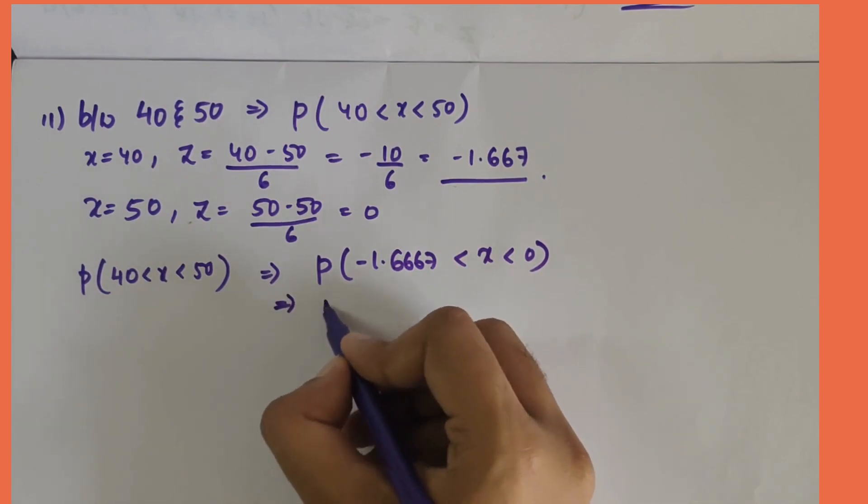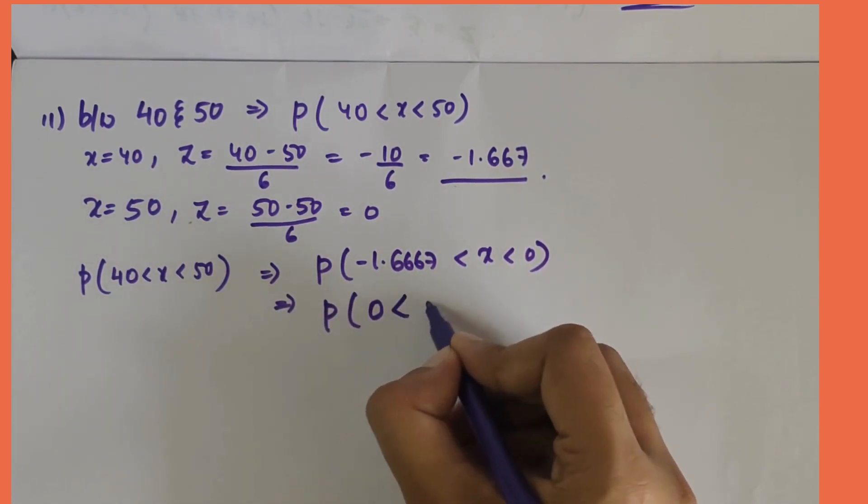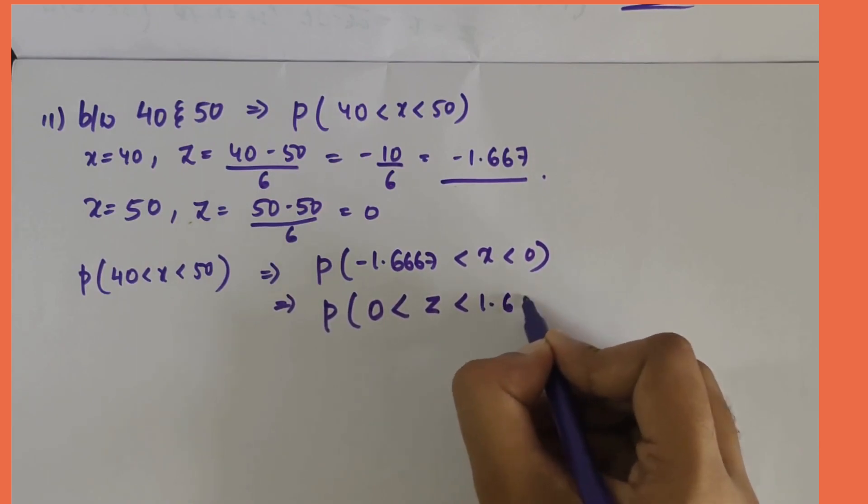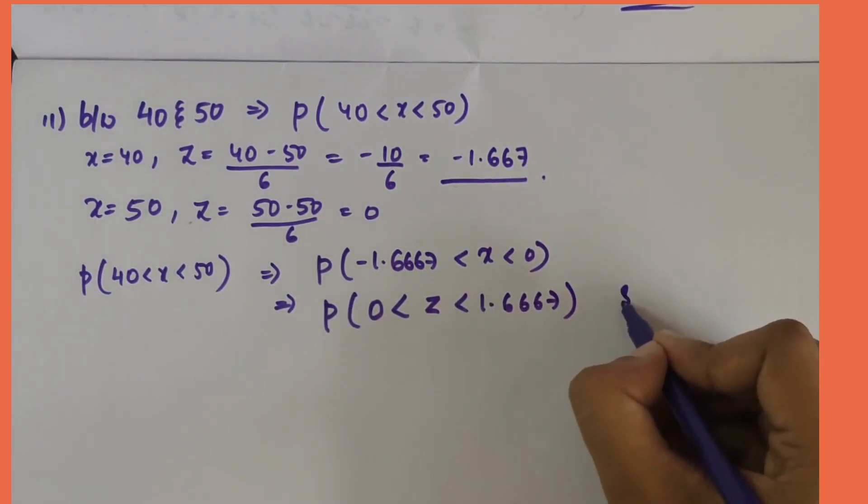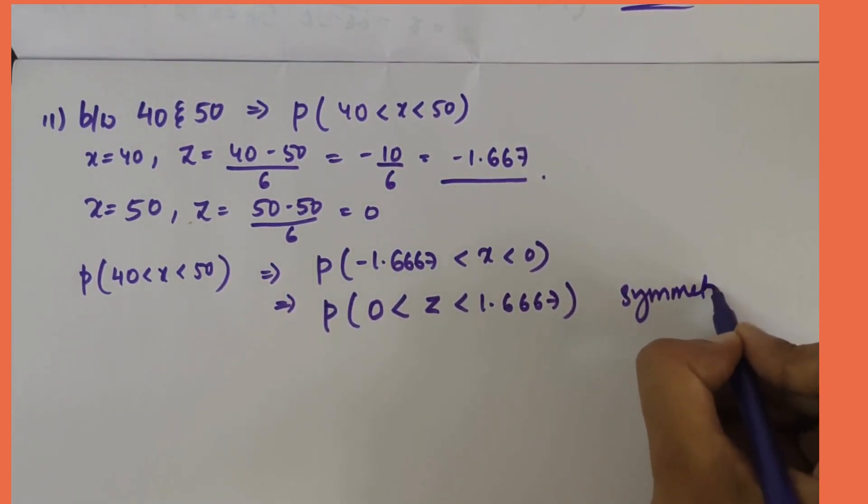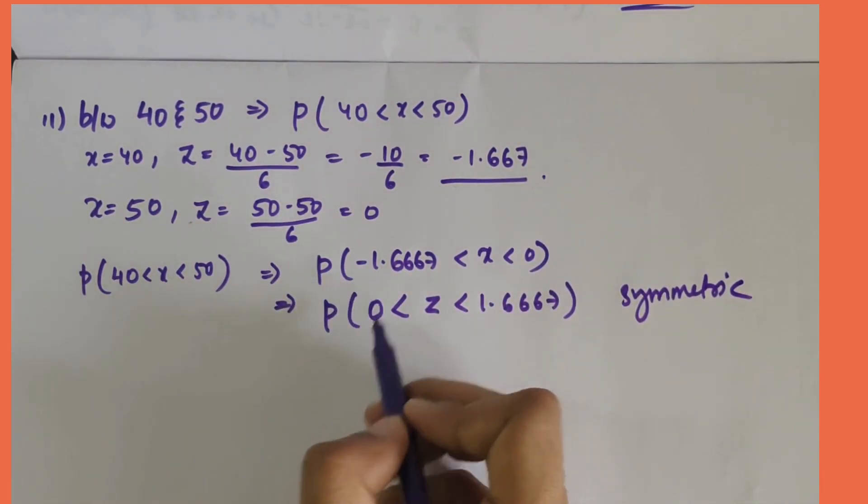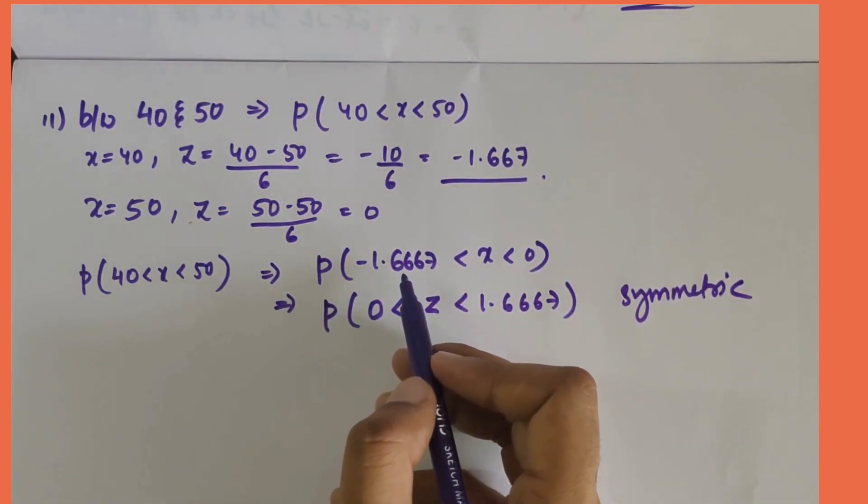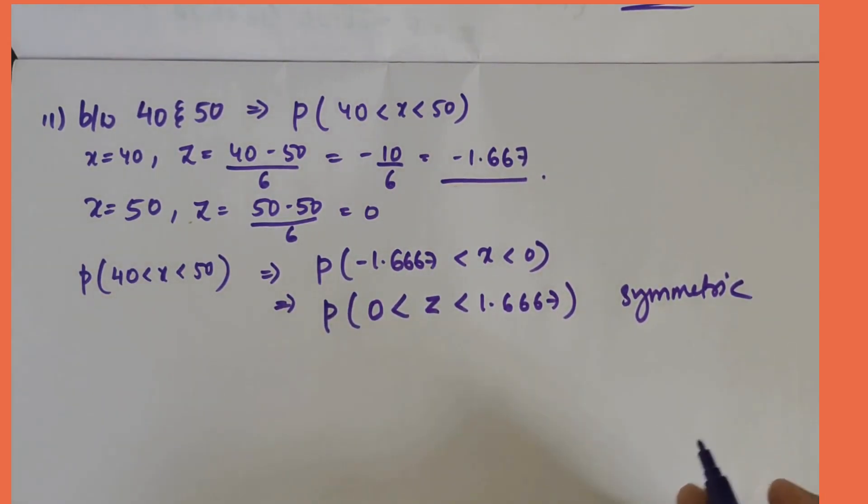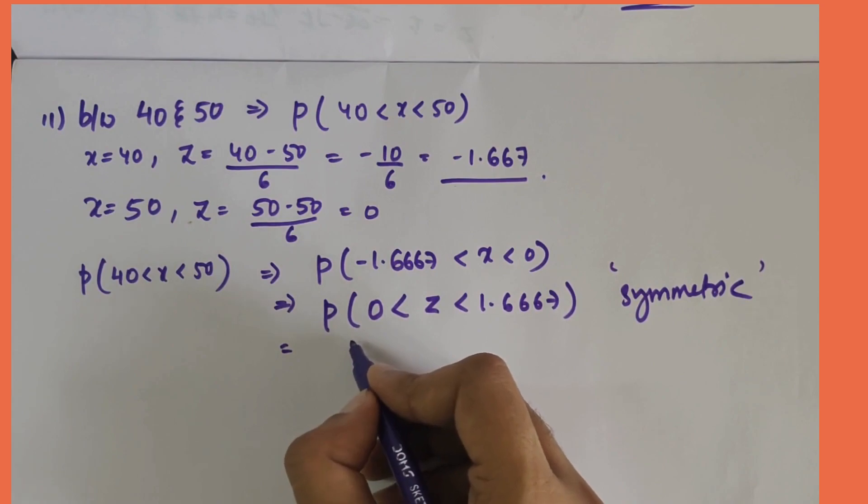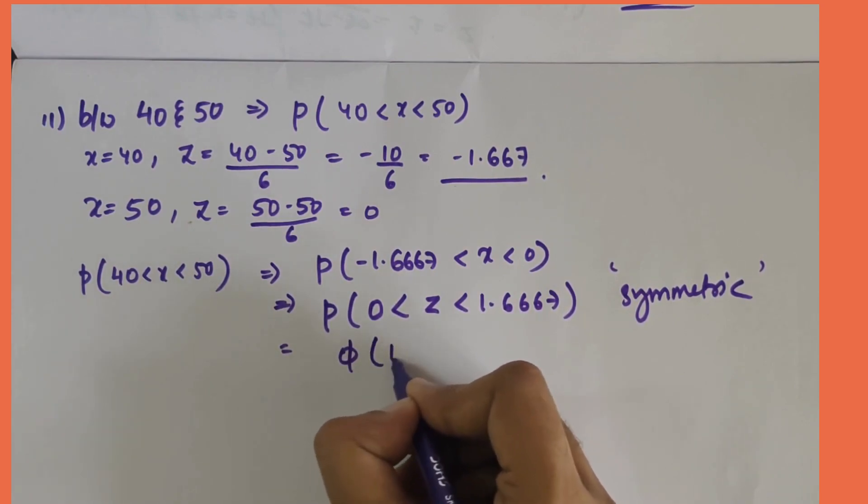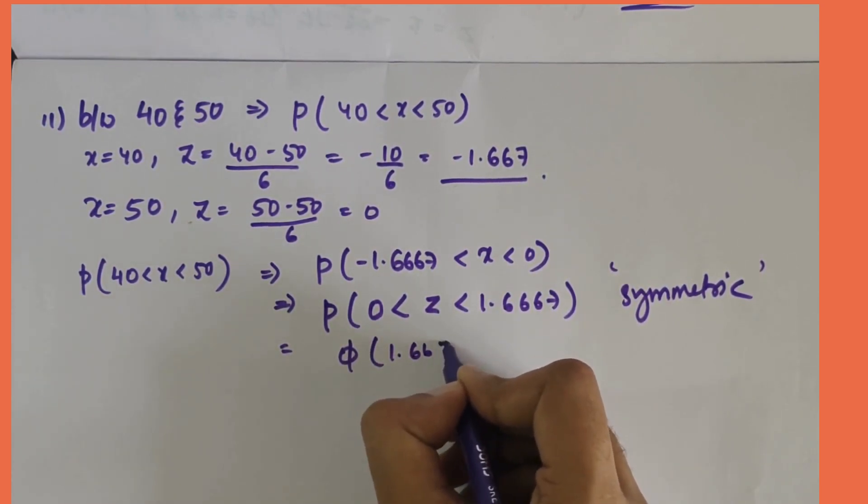Here we have P(40 < x < 50) can be written as P(minus 1.6667 < z < 0). It can be rewritten in the terms of z: 0 to z 1.667, because φ(minus 1.6667) and φ(1.667) both are same because of the symmetric nature. Here it will be φ(1.667).